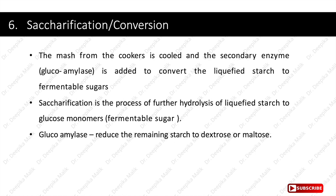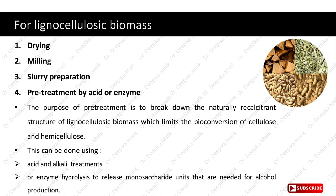For lignocellulosic biomass, the following steps are done before fermentation: first, drying; second, milling; third, slurry preparation — mixing the ground product with water; fourth, pre-treatment by acid or enzyme. The purpose of pre-treatment is to break down the naturally recalcitrant structures of lignocellulosic biomass, which limits the bioconversion of cellulose and hemicellulose — the main components of lignocellulose. Pre-treatment can be done using acid and alkali treatments or enzyme hydrolysis to release monosaccharide units needed for alcohol production.